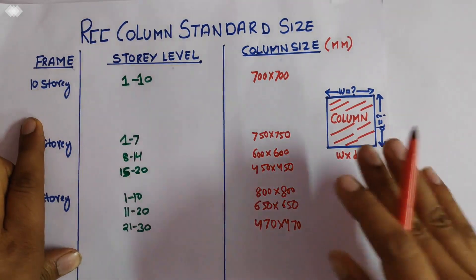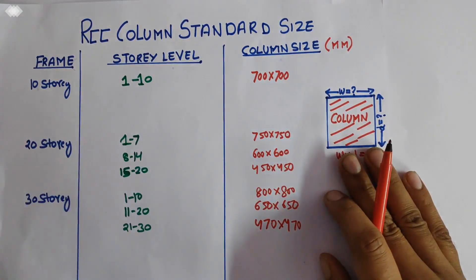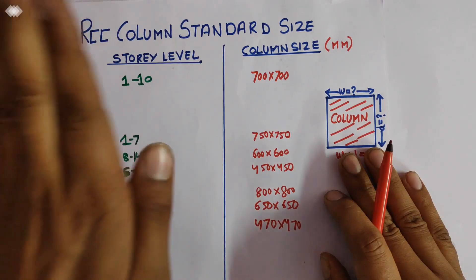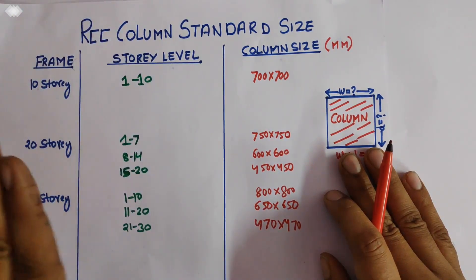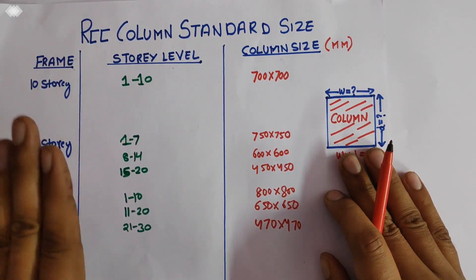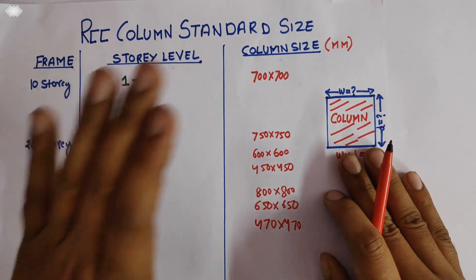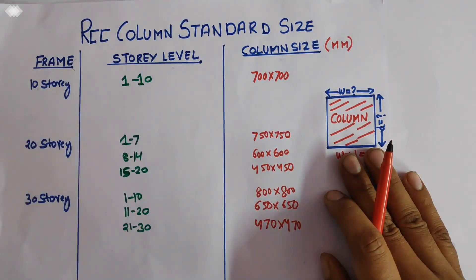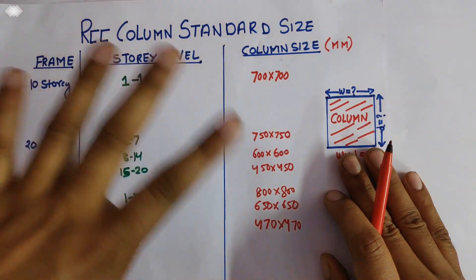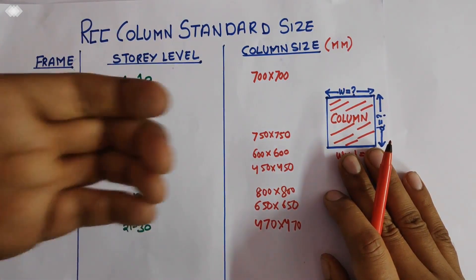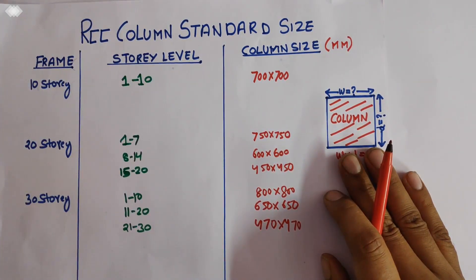This is only a rough design of column for multi-story RCC structures. This rough design sketch has been used in India by most civil engineering experts. These are general suggestions — for the actual design, we have to consider the type of load, the type of structure we need, and according to the plan we design that particular structure.